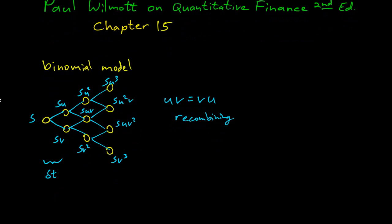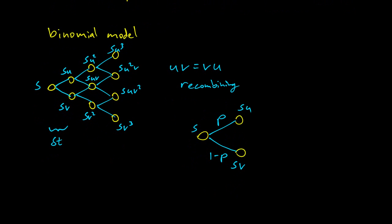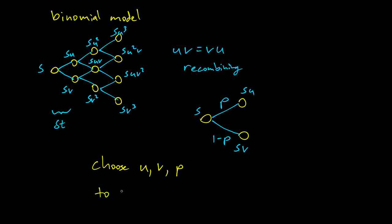Also in the model we have probability. So we have s, and then we have s times u and s times v. Going up will be probability p, and going down will be 1 minus p. Now the question is how do we choose u, v, and p to match the log normal?